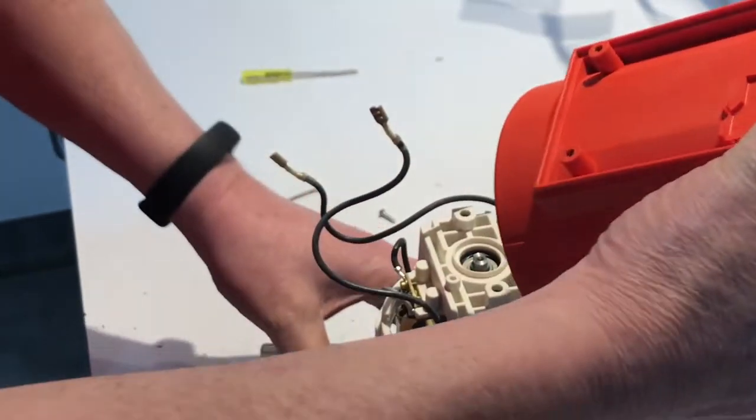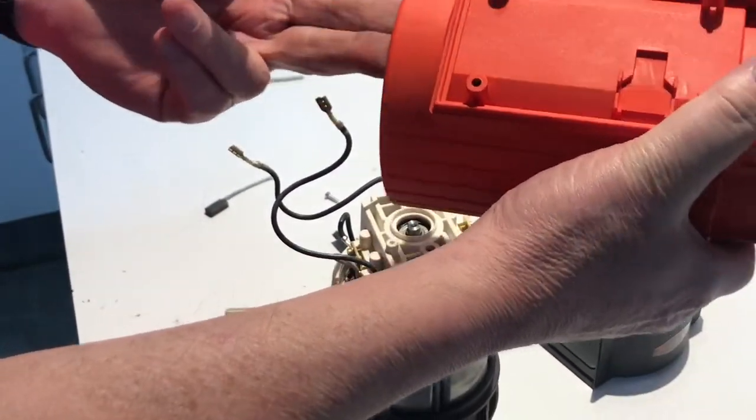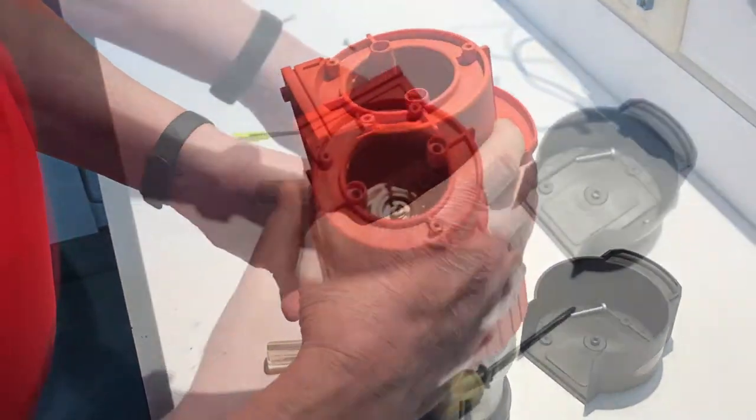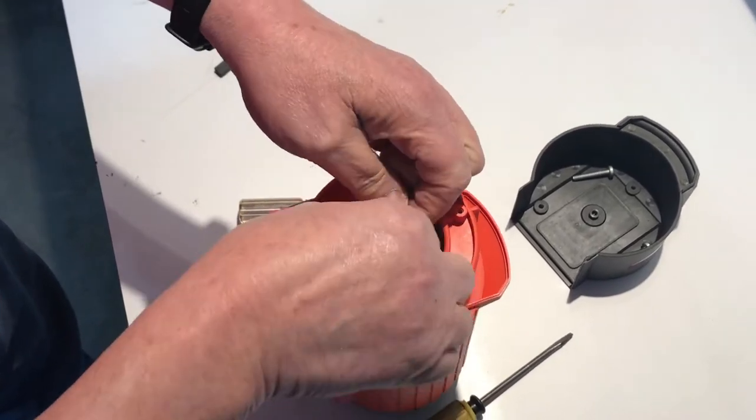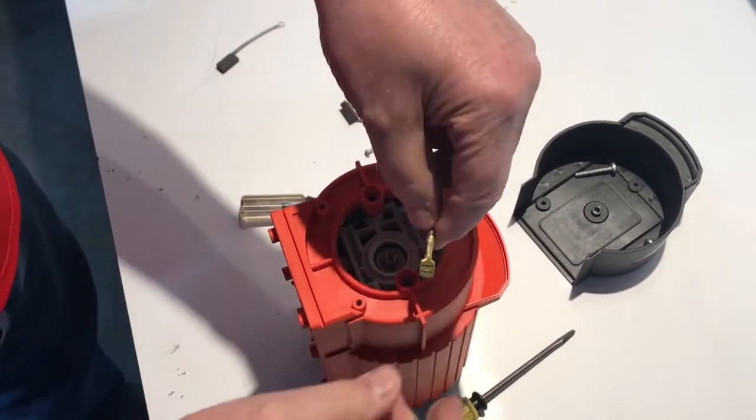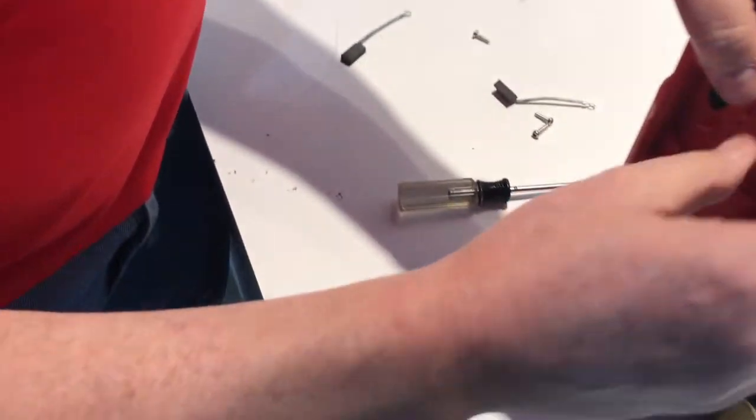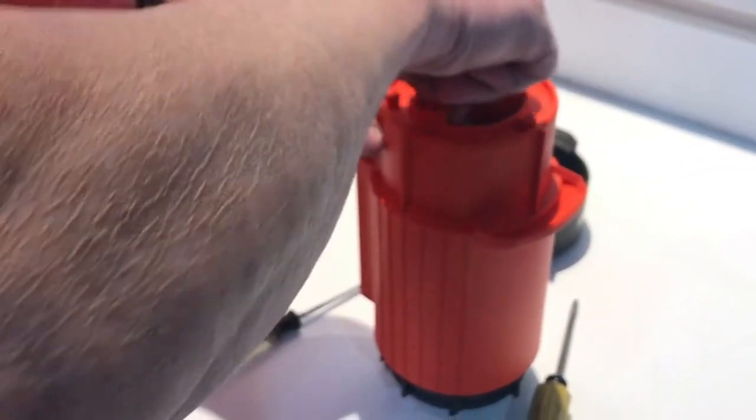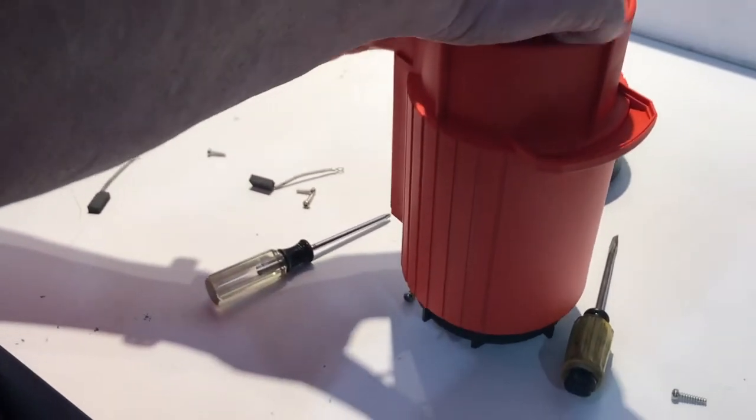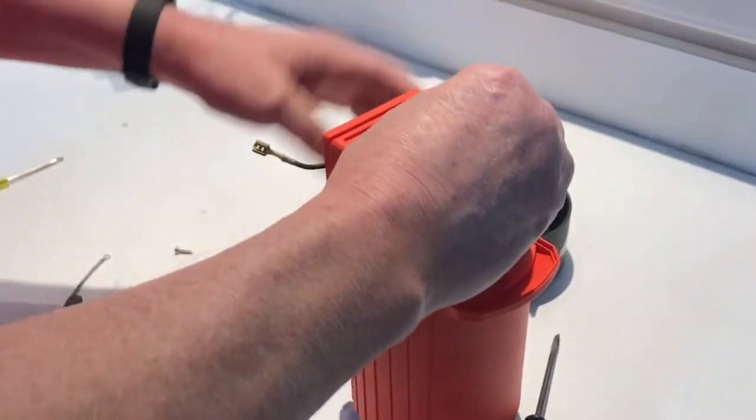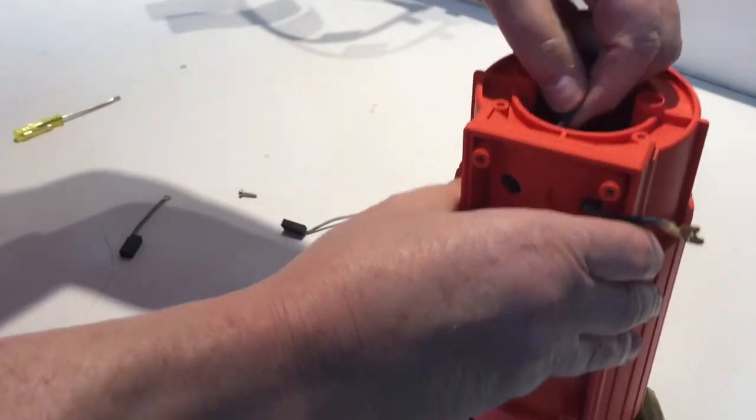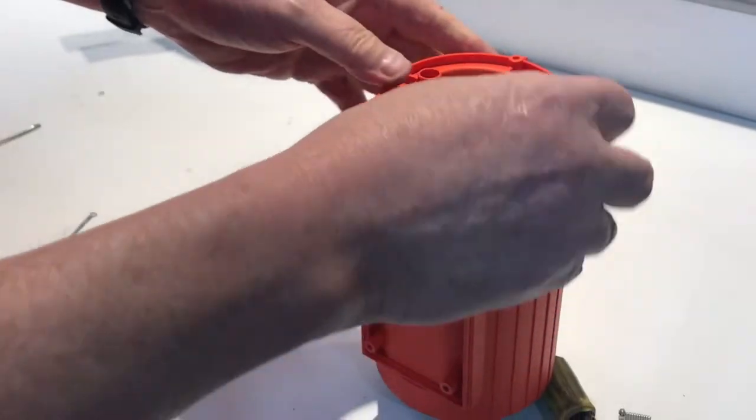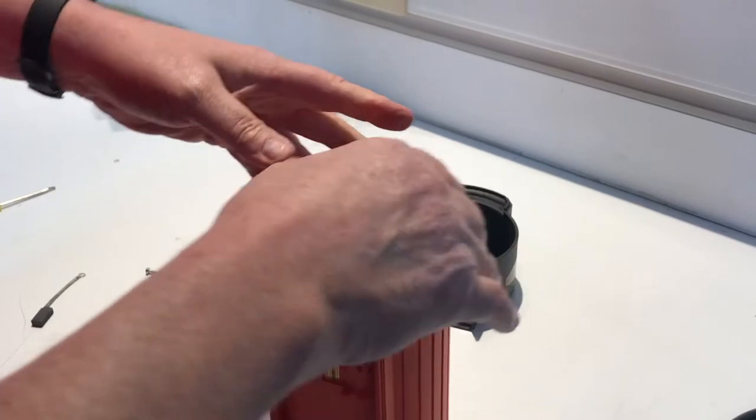So you just line up your flat spot with your flat spot on your motor cover. Put your wires up in there. Once your motor cover is halfway down, grab your wires and stick them back out through the holes. This will allow you to put the motor back all the way down.